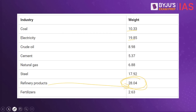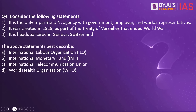Now let's look into the next practice question. Consider the following statements: it is the only tripartite UN agency with government, employer, and worker representatives. It was created in 1919 as part of the Treaty of Versailles that ended World War I. It is headquartered in Geneva, Switzerland. The above statements best describe — International Labour Organization, International Monetary Fund, International Telecommunication Union, or World Health Organization? The answer is International Labour Organization.